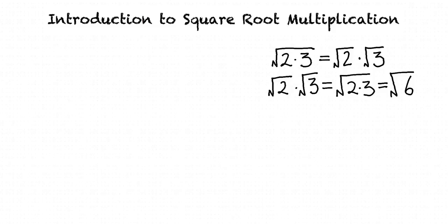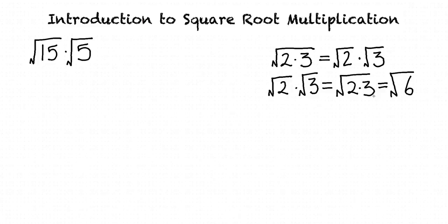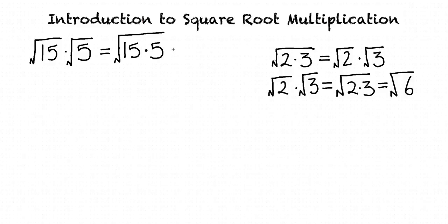Let's try some examples. Simplify the square root of 15 times the square root of 5. As we saw before, we can rewrite this as a single square root: the square root of 15 times 5. Since 15 times 5 equals 75, this can be further simplified as the square root of 75.